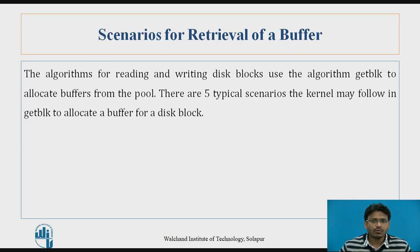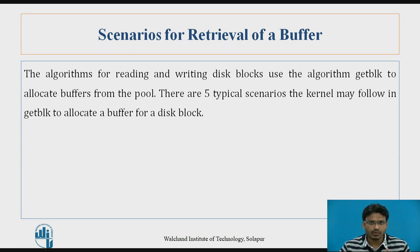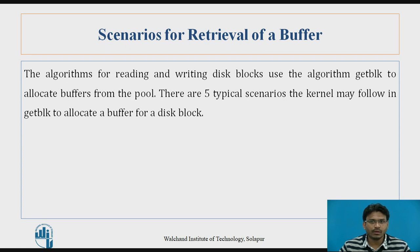Today I will give you a simple review of what these getblock scenarios are. The algorithm for reading and writing a disk block uses the algorithm getblock to allocate the buffer from the pool. There are typically 5 scenarios the kernel may follow in getblock to allocate a buffer for a disk block.